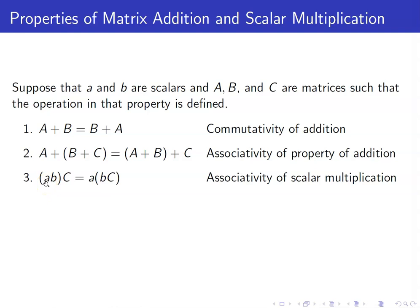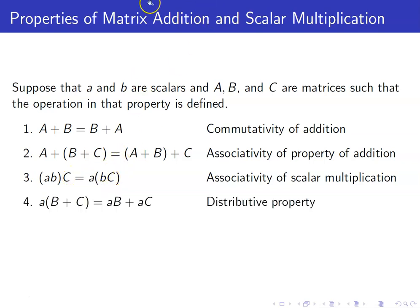Next, we have associativity of scalar multiplication. A and B here are scalars, so the product AB is a scalar, whereas C here is a matrix. A times (BC) is the same as having the matrix BC — which is a matrix, since B is a scalar and C is a matrix — and then multiplying that with your scalar A.